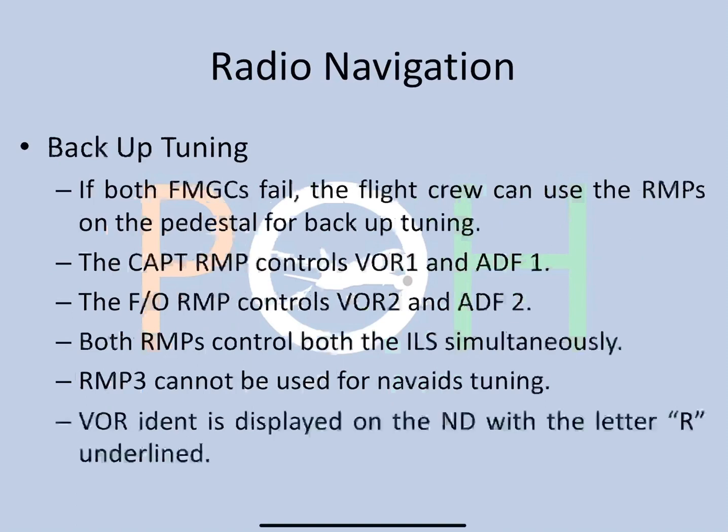Backup tuning is a worst-case scenario where both FMGCs have failed, so no one is tuning the receivers. In this case, the flight crew can use the RMPs on the pedestal for backup tuning. The captain's RMP controls VOR1 and ADF1; the first officer's RMP controls VOR2 and ADF2. Both RMPs control both ILSs simultaneously. RMP3, if installed, cannot be used for nav aid tuning. Backup tuning is identified by a letter 'R' underlined on the ND near the VOR identifier.